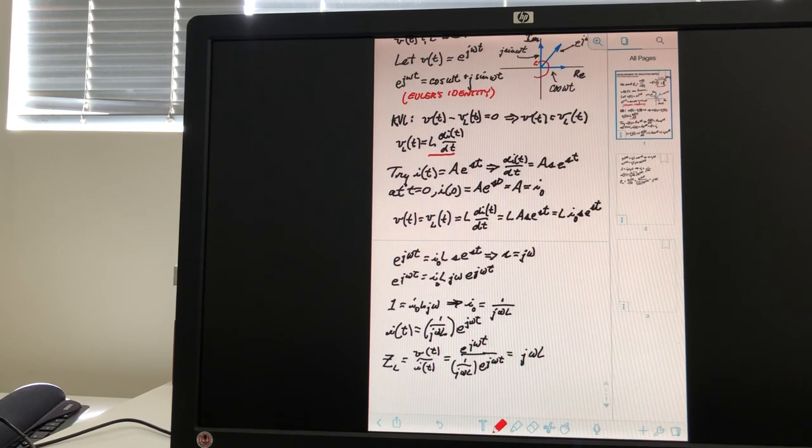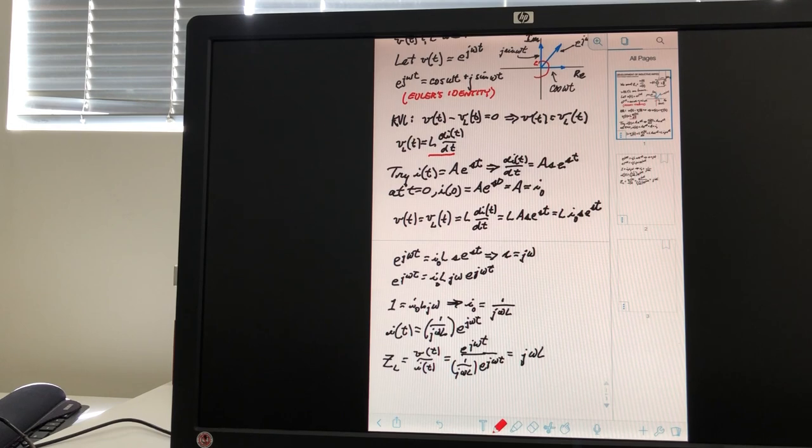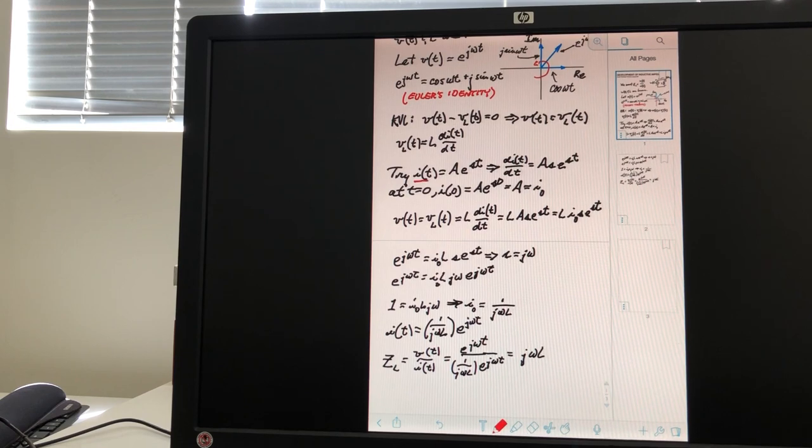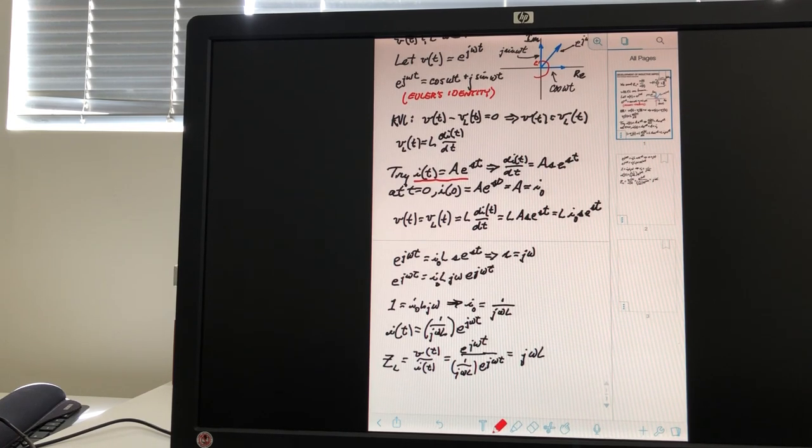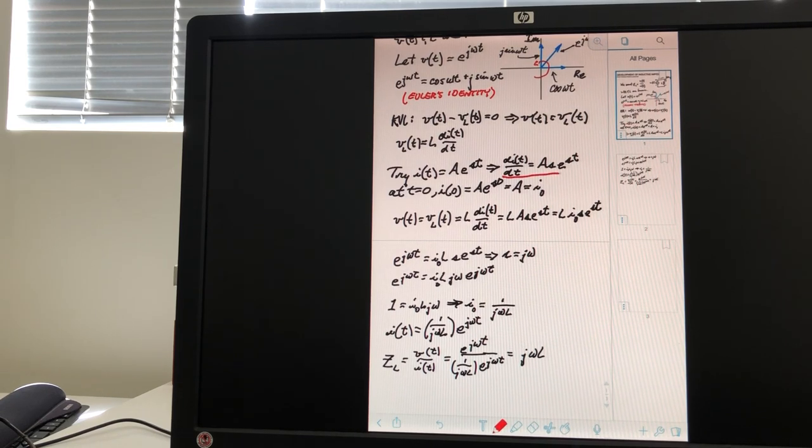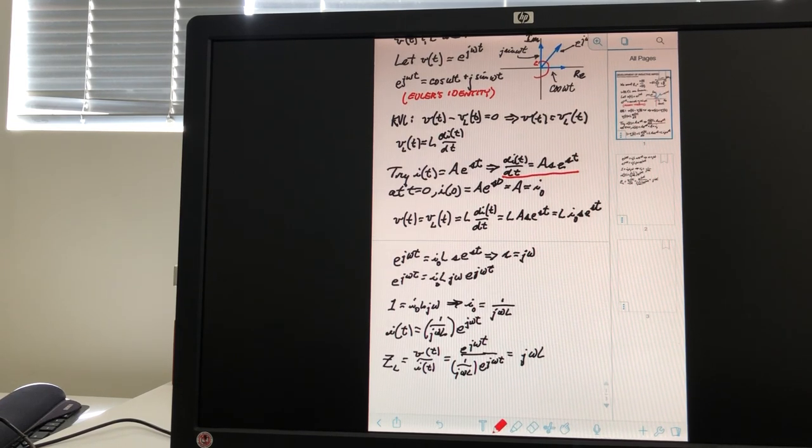So now we have this issue, what are we going to try, but the I dT, that's the unknown term, we know VL of T, we know V of T and we know L. Well, so, we can try though, we can try this expression, I of T equals A e to the ST, which means that dI dT equals A S e to the ST.